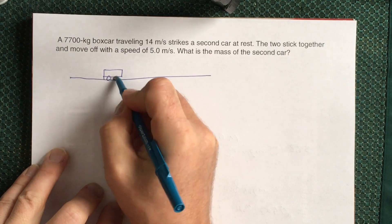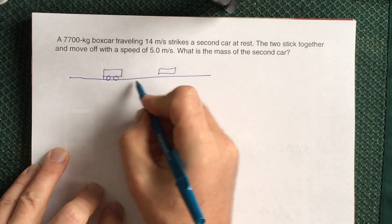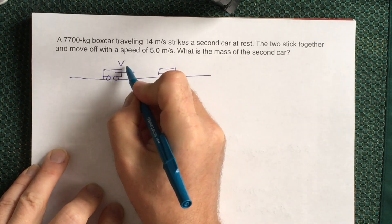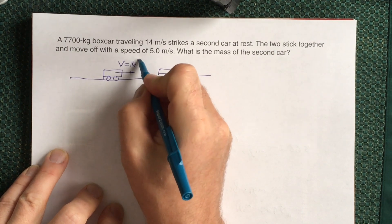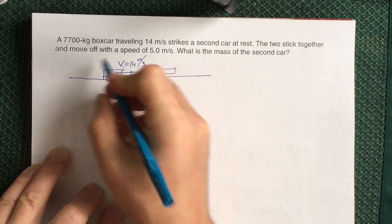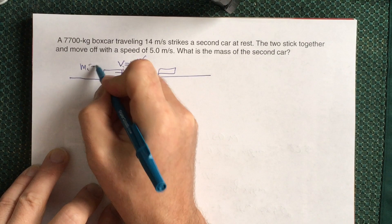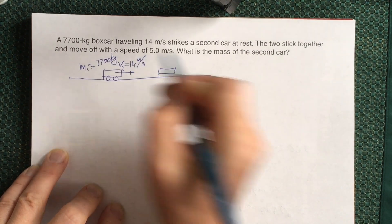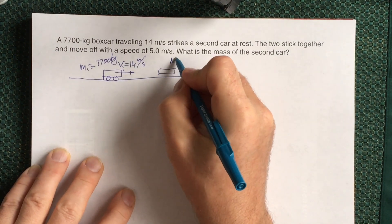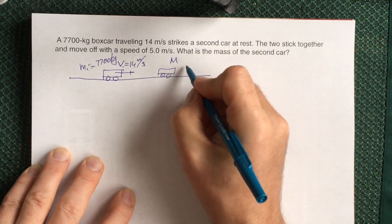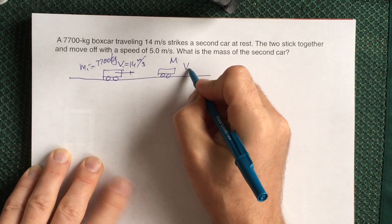We have a boxcar which moves with a speed of 14 meters per second. The mass of this boxcar is 7700 kg. It collides with another car with mass M (capital) which is at rest, so the velocity of the second car is 0 meters per second. This is our initial situation.